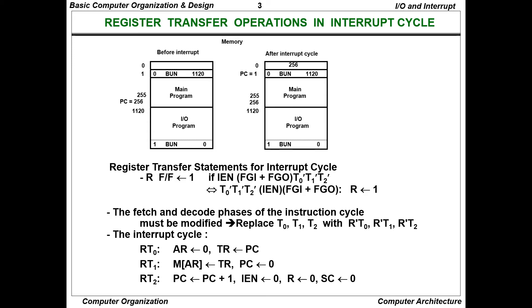The R flip-flop is set to 1 when FGI plus FGO is true. The fetch and decode phase of the instruction cycle must be modified. T0, T1, T2 are replaced with R-dash-T0, R-dash-T1, and R-dash-T2. At R-T0: PC goes to TR and the address register is set to 0. At R-T1: PC is set to 0 and TR gets memory of address register. At R-T2: PC increments to 1, IEN is set to 0, R is set to 0, and the sequence counter is set to 0. Once PC increments, IEN and R are set to 0, returning to the instruction cycle.